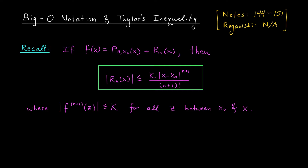As a reminder, Taylor's inequality says that if f of x is written as the sum of its n-th order Taylor polynomial centered at x naught, and a remainder term r_n of x, then that remainder term in absolute value at some point x is bounded by a constant k divided by n plus 1 factorial times the absolute value of x minus x naught to the n plus 1.